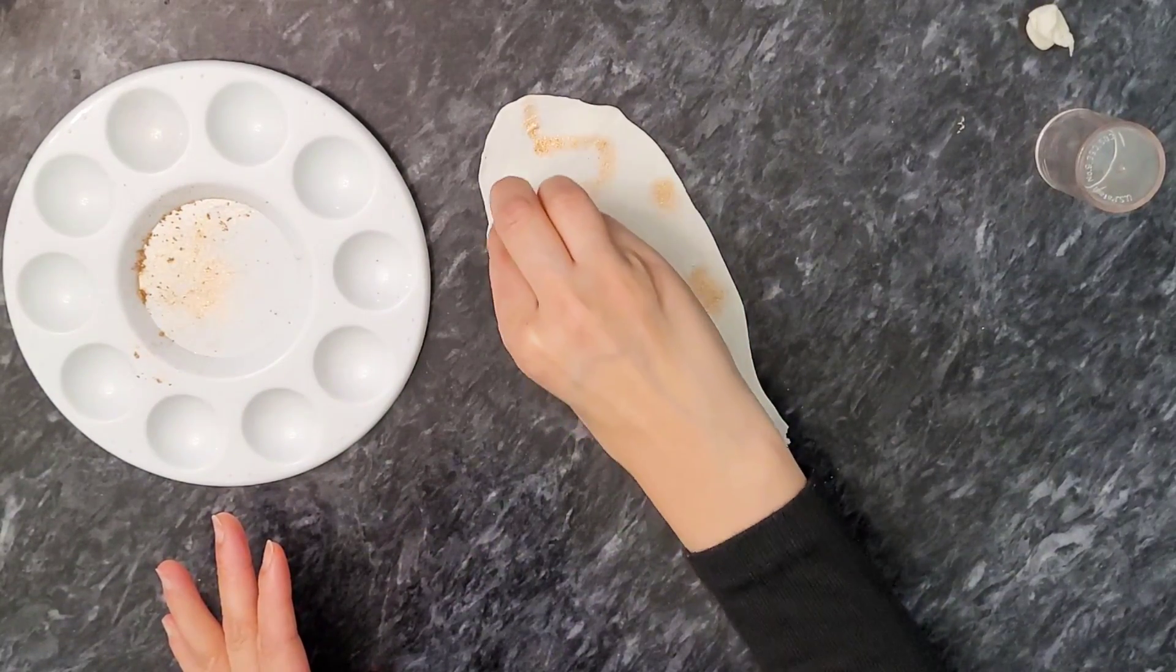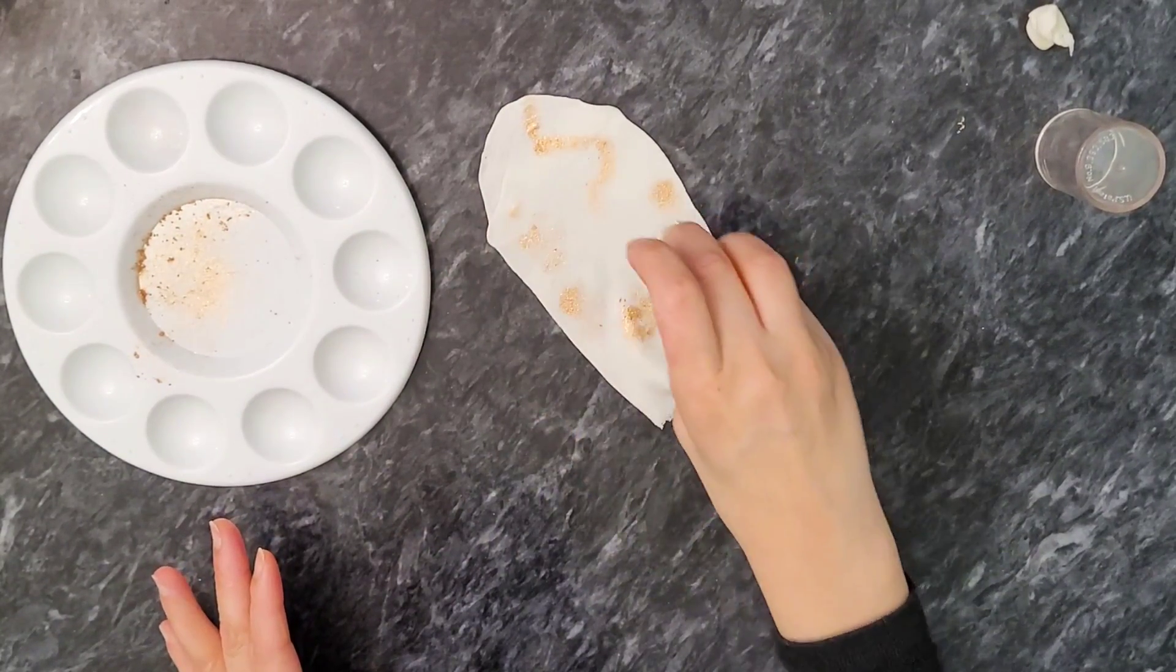And then just dab away wherever you want. It will work with all the lusters. But yeah that's how you do that, just to save you from all the mess the gold leaf leaves you with.